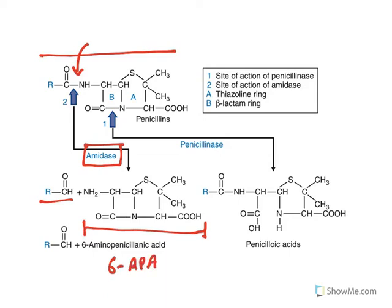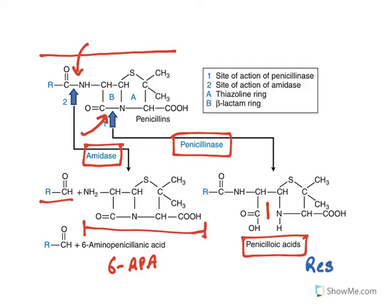Please refer the previous video to get the details of that. On the other side, the enzymatic side is penicillinase produced by bacteria, also known as beta-lactamase — both of them are the same. The enzyme can act on the thiazolidine ring and break it, resulting in the formation of penicilloic acid. Penicilloic acid does not have any antibacterial activity, and this is the major pathway by which bacteria develop resistance.